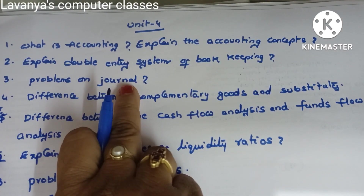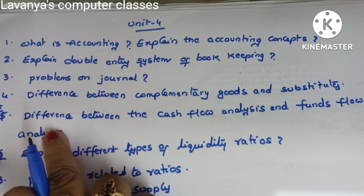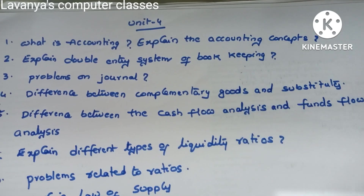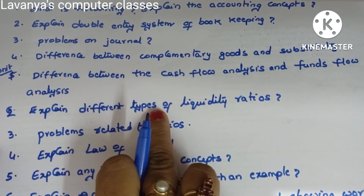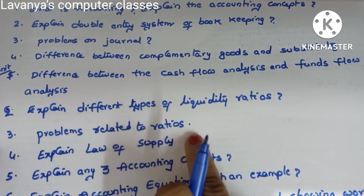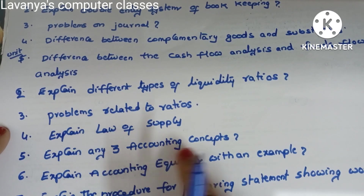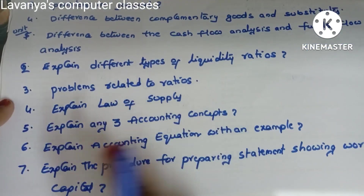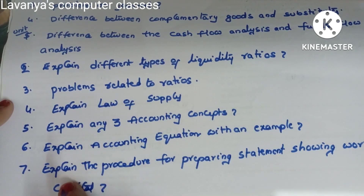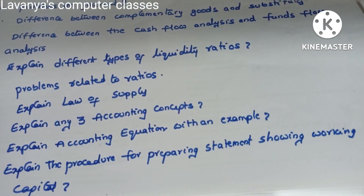Next: problems on journal. Difference between complementary goods and substitutes. Next: difference between cash flow analysis and funds flow analysis — also an important question. Explain different types of liquidity ratios. Explain problems related to ratios. Explain the law of supply. Explain any three accounting concepts. Next: explain the accounting equation with an example, and explain the procedure for preparing a statement showing working capital.